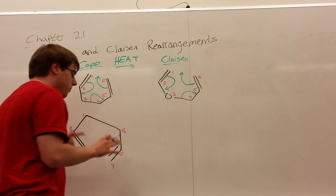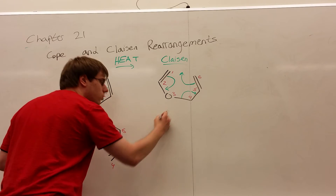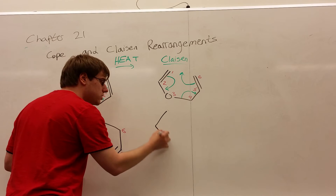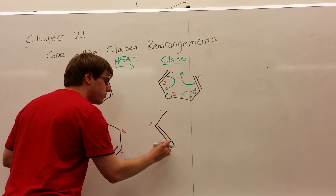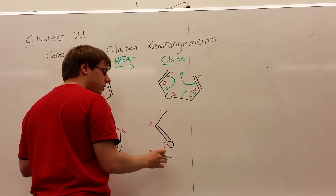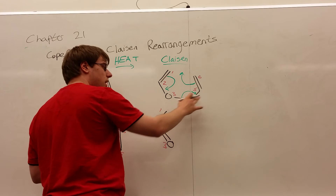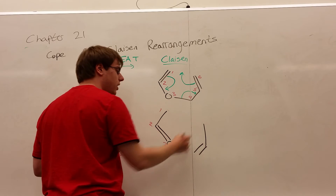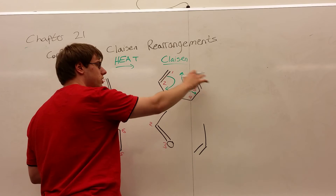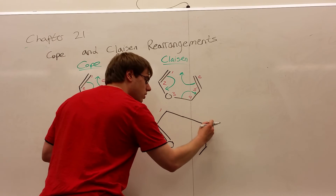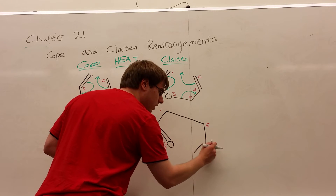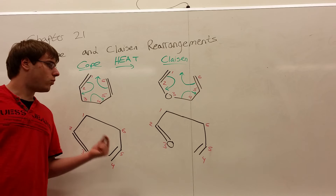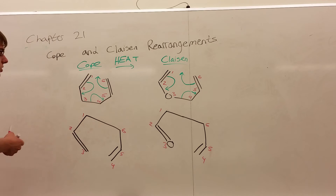Now let's look at the Claisen rearrangement. The product is going to look fairly comparable. One and two was originally a double bond, but the arrow starts from that, which means it's going to become a single bond. The arrow ends between two and three, which means there should now be a double bond between two and three. For three and four, the arrow started from a single bond, which means we're breaking that bond, but by doing that we make a double bond between four and five. The double bond from five and six becomes a single bond, and that bond was used to make a new single bond between one and six. The products are fairly similar — the only difference is now we have an oxygen. Three and four ended up being disconnected from each other, and one and six now are single bonded to each other. That's the general idea behind either the Cope or the Claisen rearrangement.